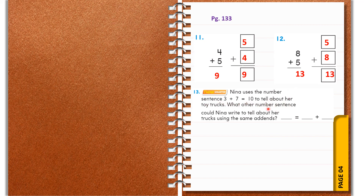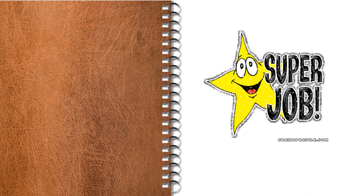Thirteenth question: Nina uses the number sentence three plus seven equals ten to tell about her toy trucks. What other number sentence could Nina write using the same addends? The addends are three and seven. Change the order and you can write seven plus three, and the sum is ten — so you write ten equals seven plus three.